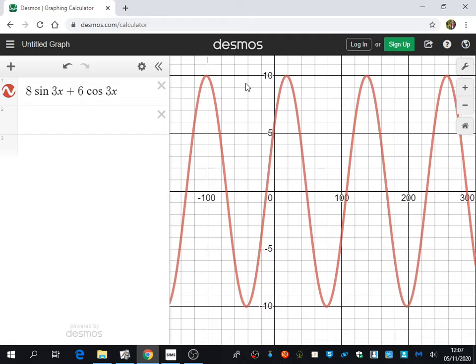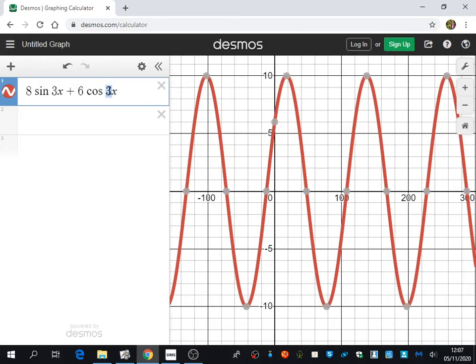It's been stretched up to where? To 10, because the value of r is 10. So that makes sense. I'm going to just switch one of the arguments. And we're going to see if we still have a harmonic, if we still have a sinusoidal pattern. I'm going to change this one from a 3x to an x.